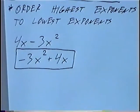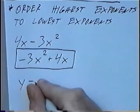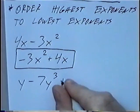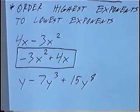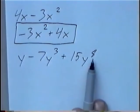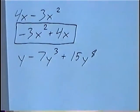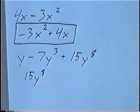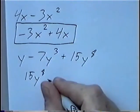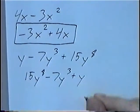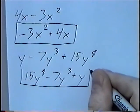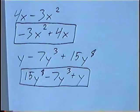Second and last question: y minus 7y to the third power plus 15y to the eighth power. Ordering from highest to lowest exponents: the highest exponent is 8, so 15y to the eighth is the first term. The next highest is 3, so minus 7y to the third power is the second term. The last exponent is 1, a single y, which is positive, so plus y. The final answer is 15y to the eighth minus 7y to the third power plus y.